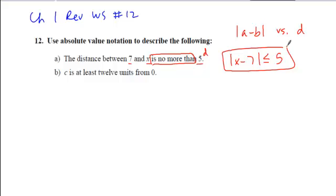And for the second one, I have c, 12, and 0. 12 is my distance, so I'm going to take the absolute value of c minus 0, compare that to 12.